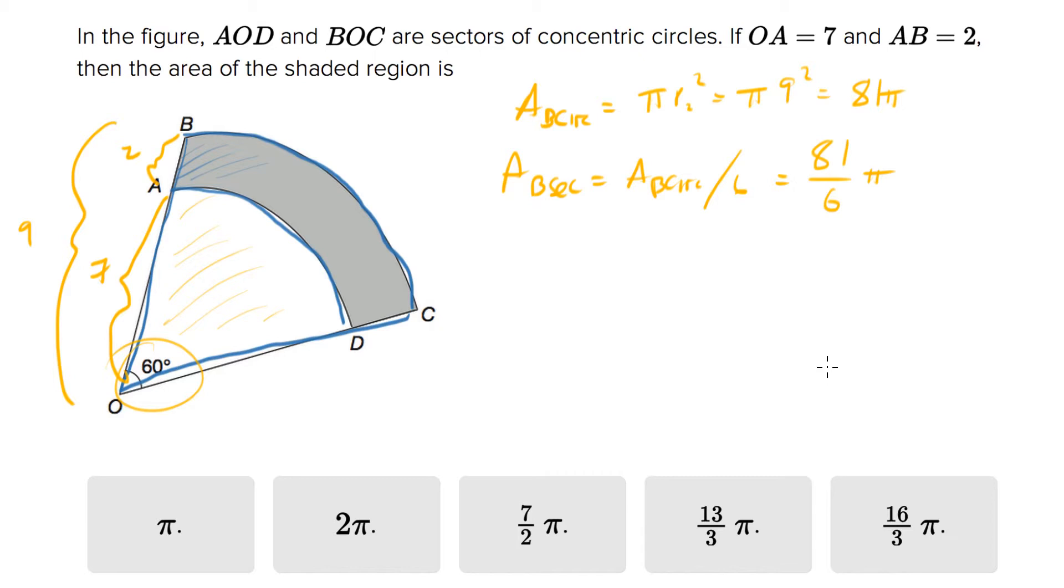The area of the small circle is also πr². In this case r is 7, so π times 7² is 49π. The area of the small sector is the area of the small circle over 6, which is 49π/6.